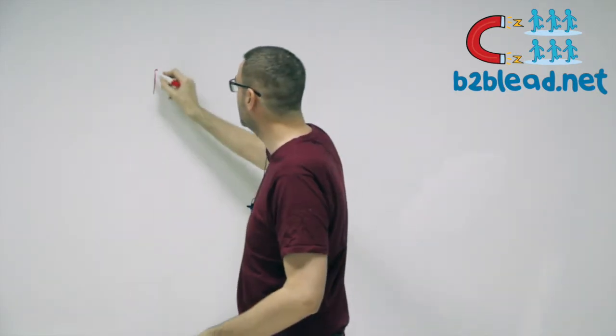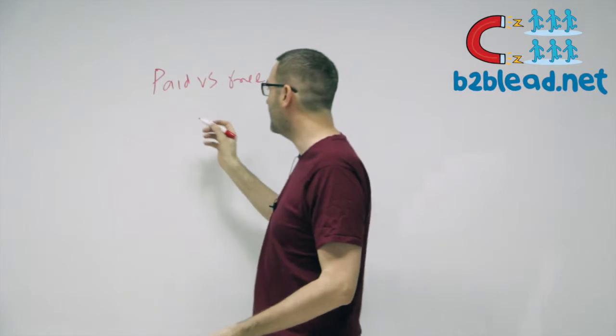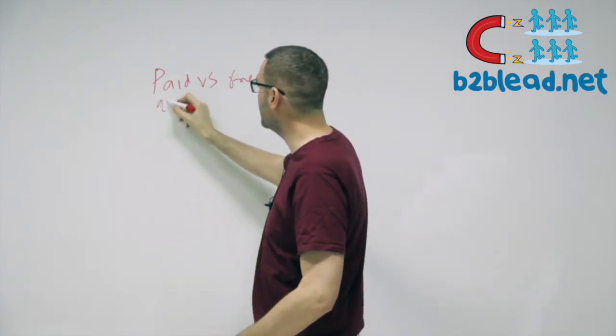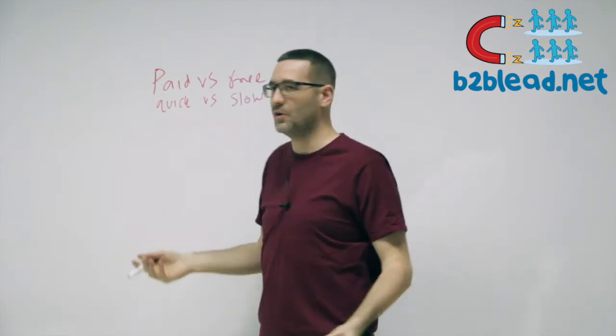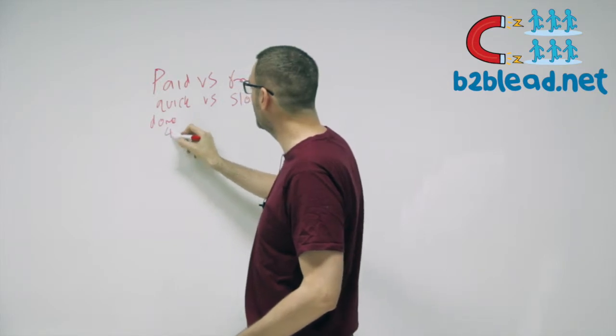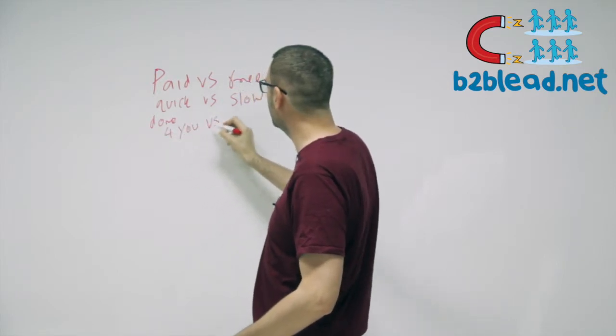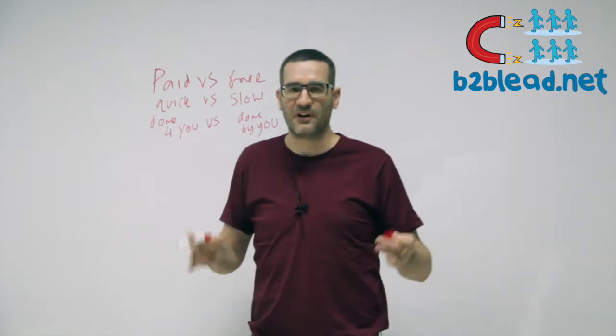I'm going to try and condense the anatomy of lead generation in about 10 minutes, so I'm going to burn through it really quickly. You've got different types of lead generation — you've got paid versus free, which is basically quick versus slow, or done-for-you versus done-by-you.